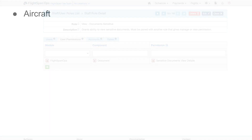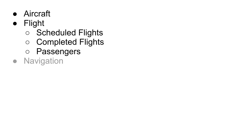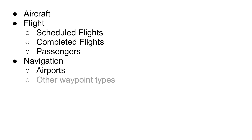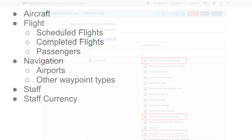There are five categories of document permissions: Aircraft; Flight, which includes scheduled flights, completed flights, and passengers; Navigation, which includes airports and other waypoint types; Staff; and Staff Currency. Within each of those categories there are two fundamental permissions.